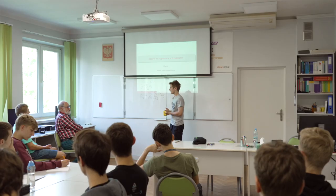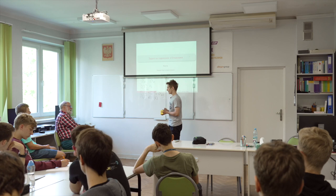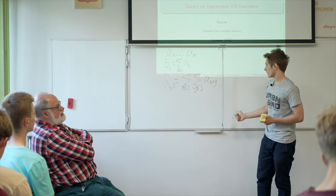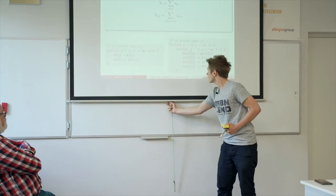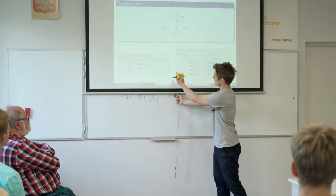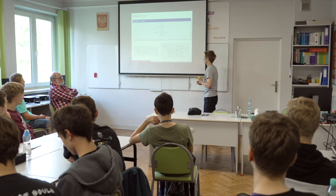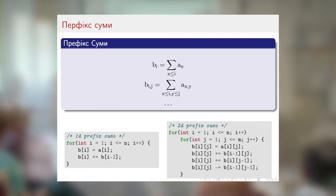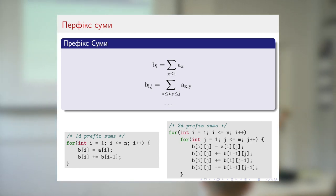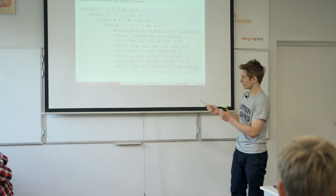We want to compute prefix sums in N dimensions, and we also want to do it fast. We might use some visualizations, but they will stop being helpful at some point. This is how one-dimensional prefix sum computation looks, and this is how two-dimensional prefix sum computation usually looks. I suppose most of you would write something like this. The arrays are one-indexed here. And this is what it looks like to compute four-dimensional prefix sums.